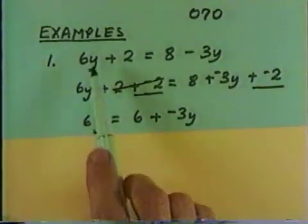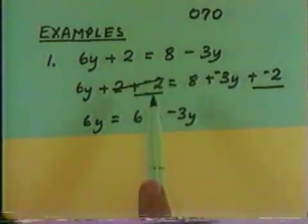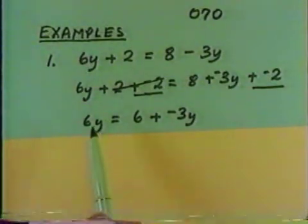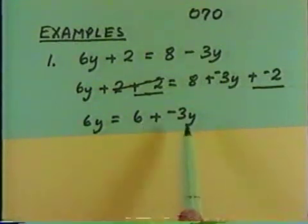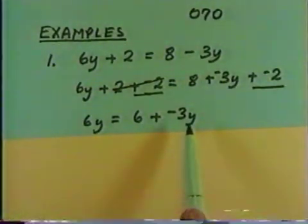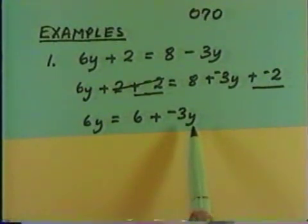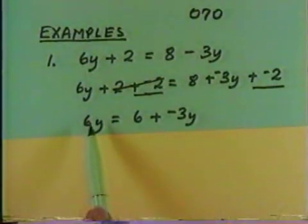Notice that at the beginning we had 4 terms, two on either side of the equation. Now that we've added negative 2 to both sides of the equation, we're down to only 3 terms. The left-hand side has a variable term, the right-hand side has a constant that we want and a variable that we don't. Let's eliminate this variable term on the right-hand side by adding the opposite of negative 3y. Remember the golden rule: if we add positive 3y on the right, we must add positive 3y on the left. So we'll add 3y to both sides of the equation.